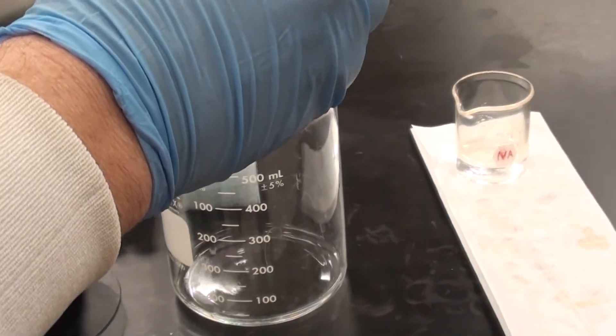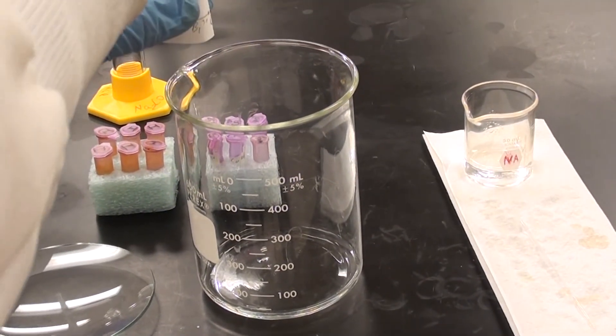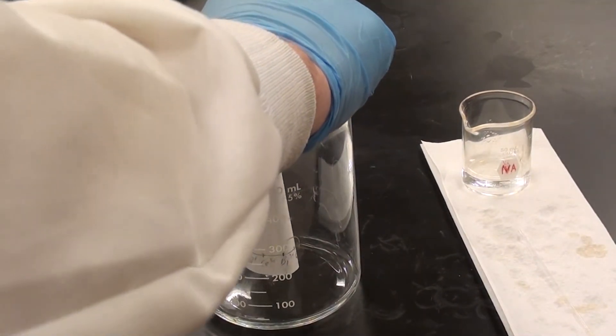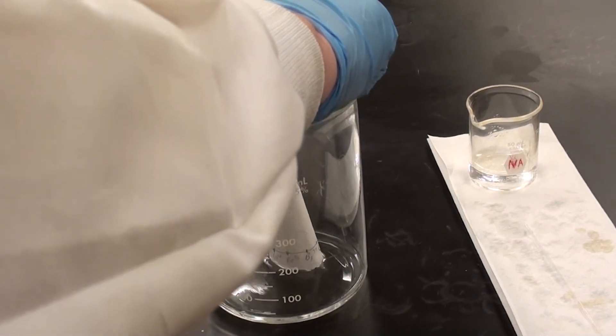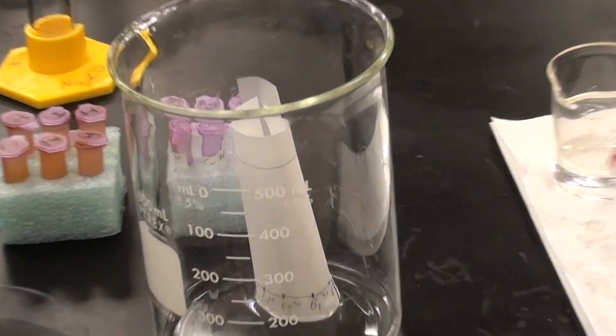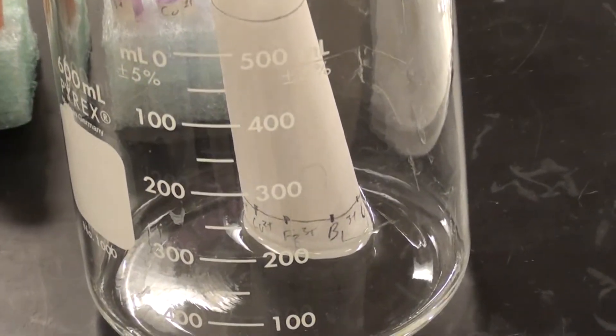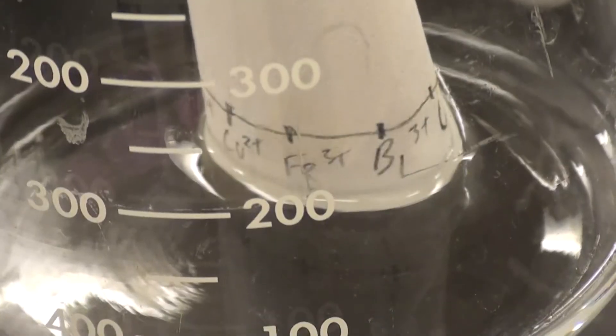And it's really important that once you've put it into the developing chamber, that you don't move it and you don't move the developing chamber. Now, as you can see, the level of the liquid in there is below the level of the line where the spots were placed.